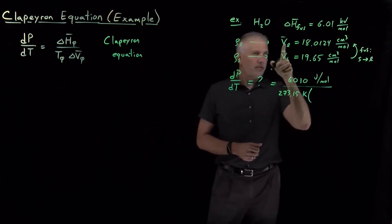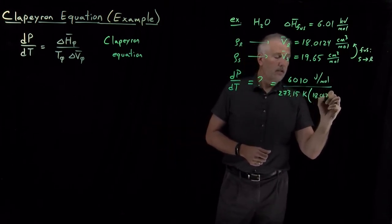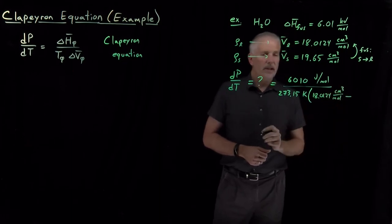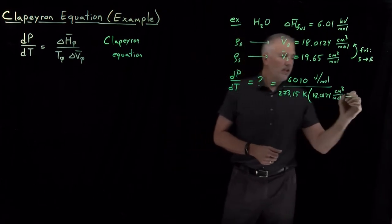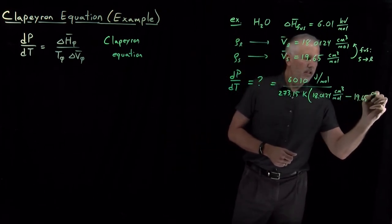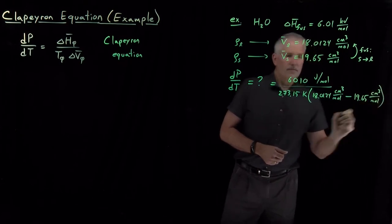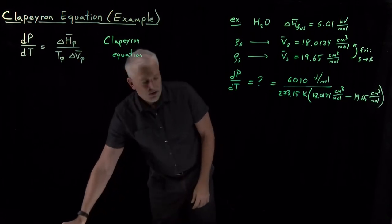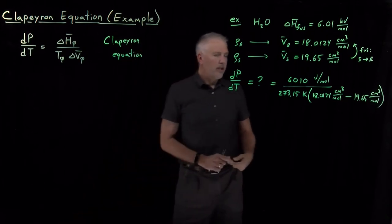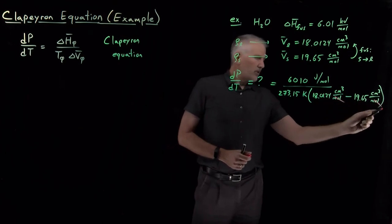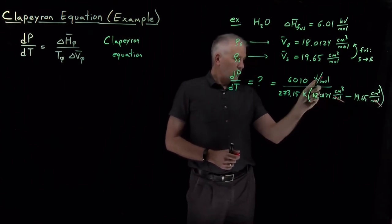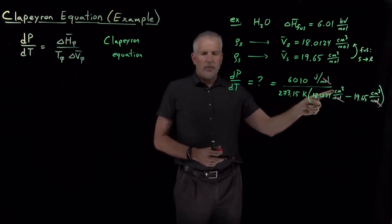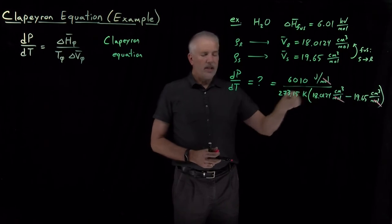So the ΔV is volume of the liquid, 18 cubic centimeters per mole minus the molar volume of the solid, 19 and change cubic centimeters per mole. Except we need to be careful about units. Moles are fine. The moles in the denominator of the denominator cancel moles in the denominator of the numerator. But we're left with joules and Kelvin and cubic centimeters, none of which will cancel each other.